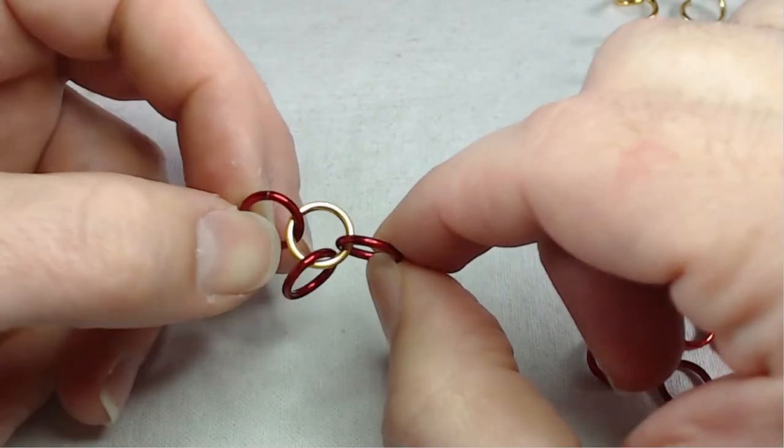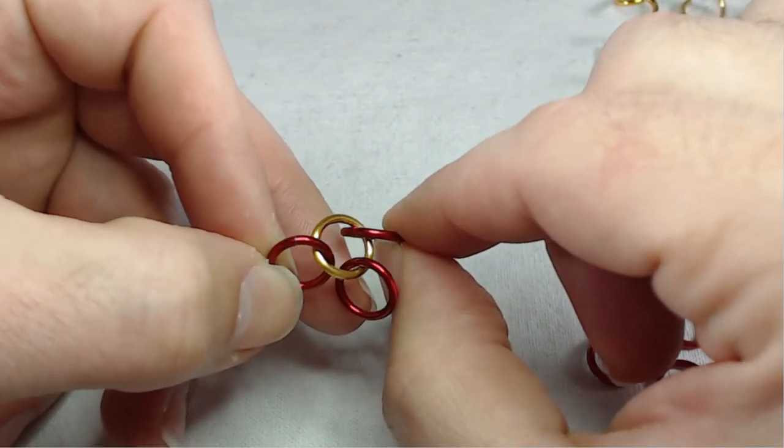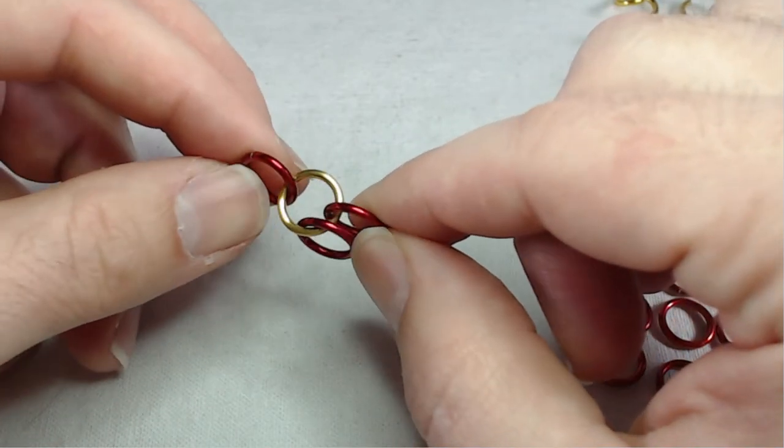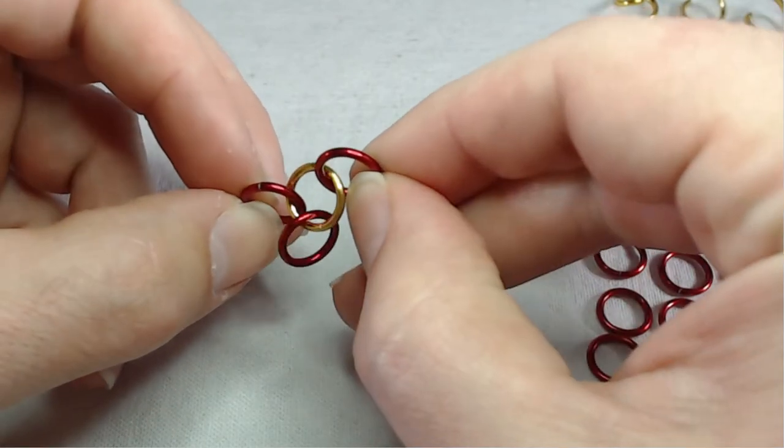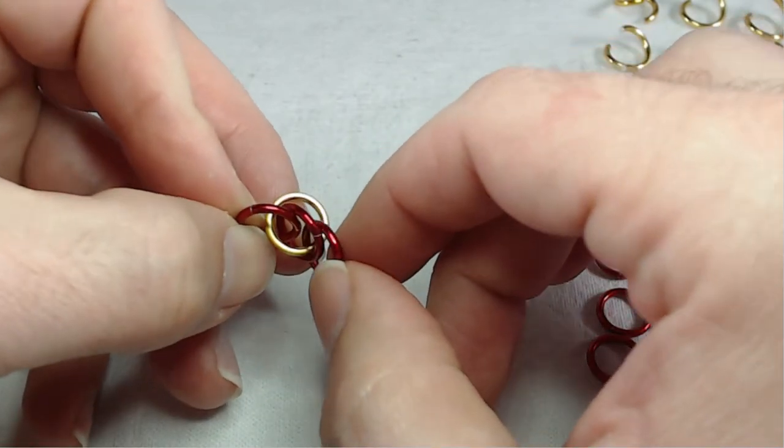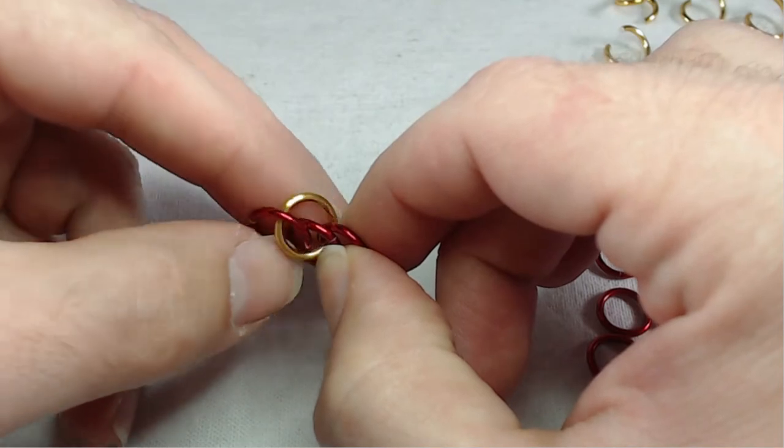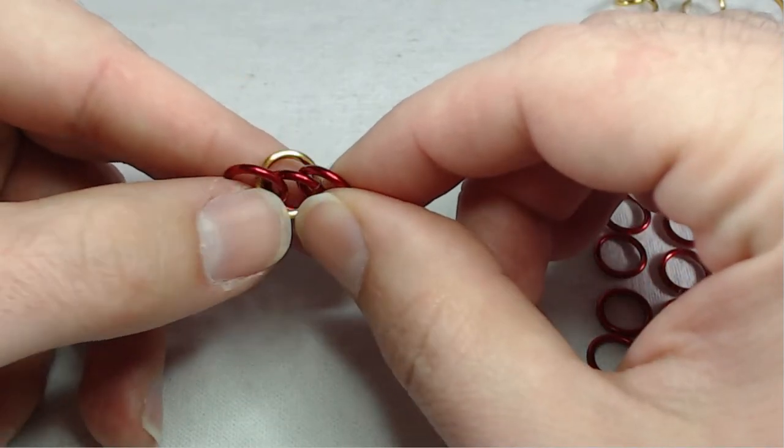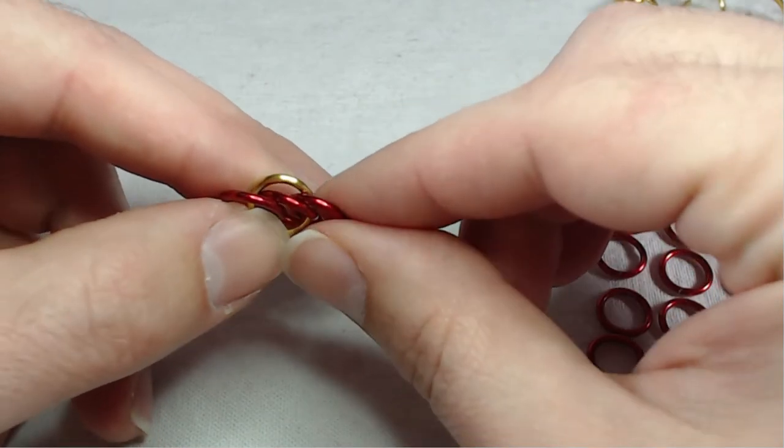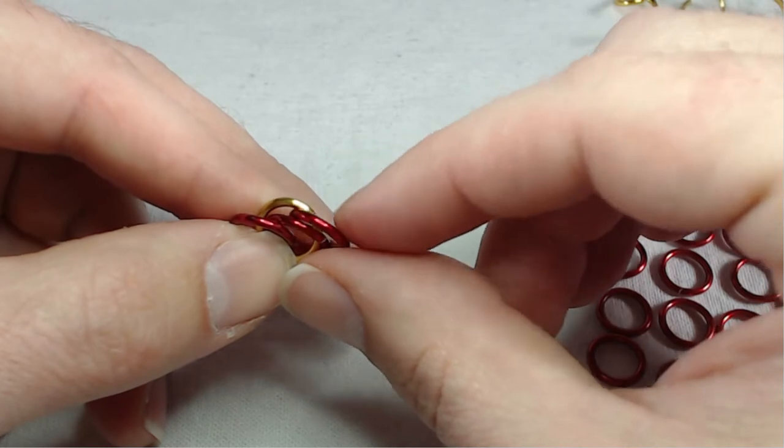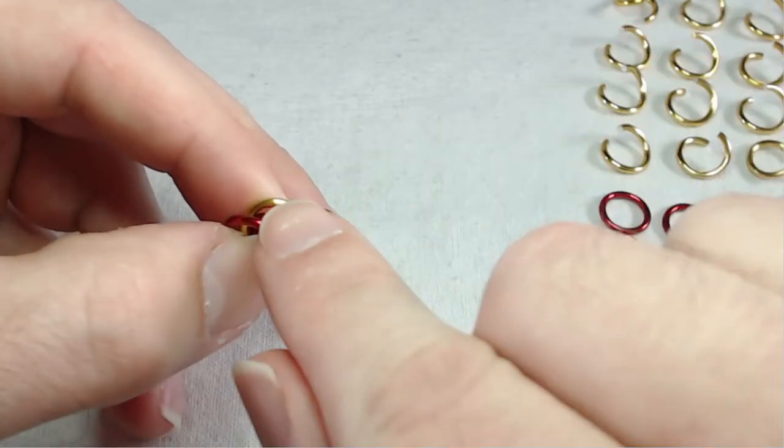What you're going to do is you just want to sandwich that middle one in between. So I push it behind the left one and on top of the right one. And then I have the ring, our closed ring from before tilted up and away from me. So it is pointing this way.